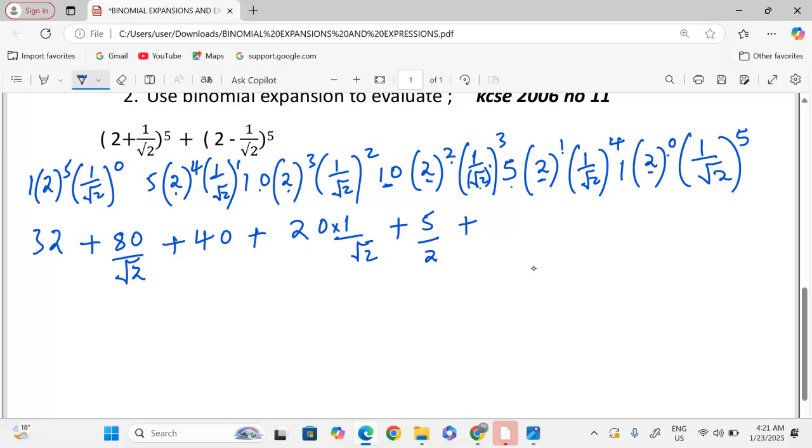Plus, in the last term, we have 2 power 0, which is 1. Then, when we are talking about root 2, multiplied by 5, it's going to be 4 root 2. So, we have 1 out of 4 root 2. This is the first expansion.